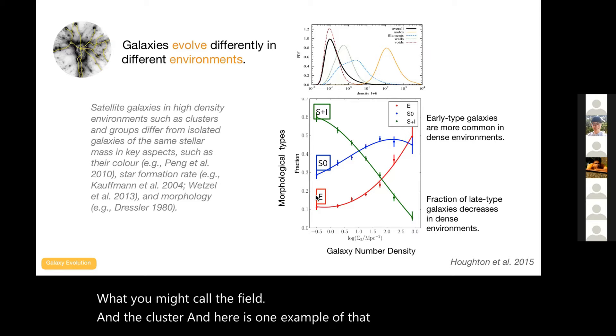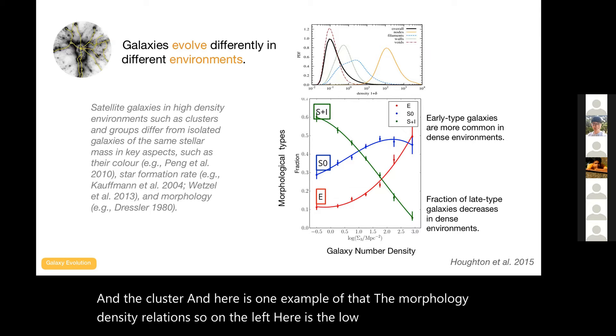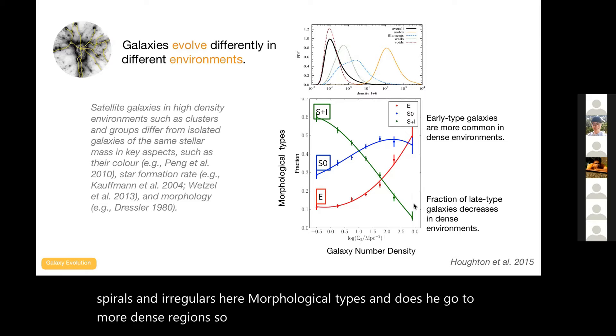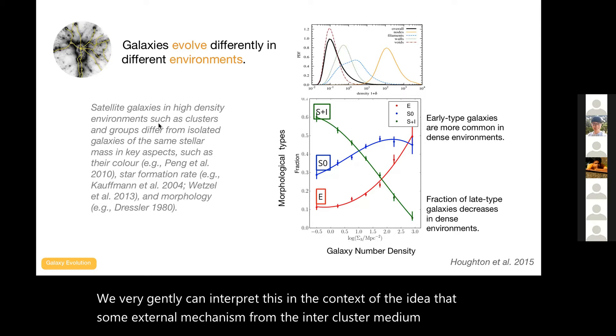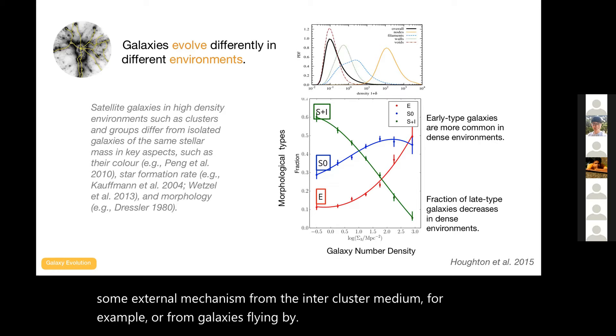Here's one example of that, the morphology-density relation. On the left here is the low density regime, you might call the field, and you can see that's dominated by spirals and irregulars, morphological types. As you go to more dense regions, galaxy clusters, this drops sharply and is replaced by ellipticals and lenticular S0 galaxies. We can very generally interpret this in the context that some external mechanism from the inter-cluster medium, for example, or from galaxies flying by, stops the star formation in galaxies when they enter the cluster, which changes the whole makeup of galaxies including the morphology, more generally the star formation. Statistically they look different.